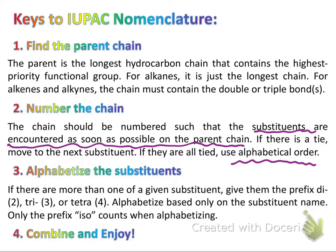Finally, before we make our name, we're going to alphabetize the substituents. If you have two, three, or four of a substituent, you'll use di, tri, or tetra — however, these do not count when alphabetizing. The only prefix we will actually use when alphabetizing is iso, such as isopropyl and isobutyl. Then we've done all the work and just need to combine and enjoy. Let's get to it.